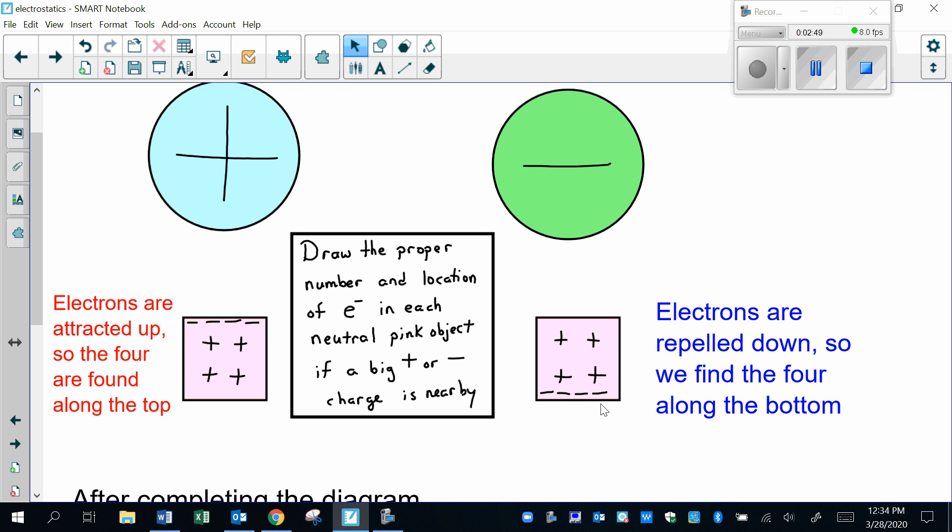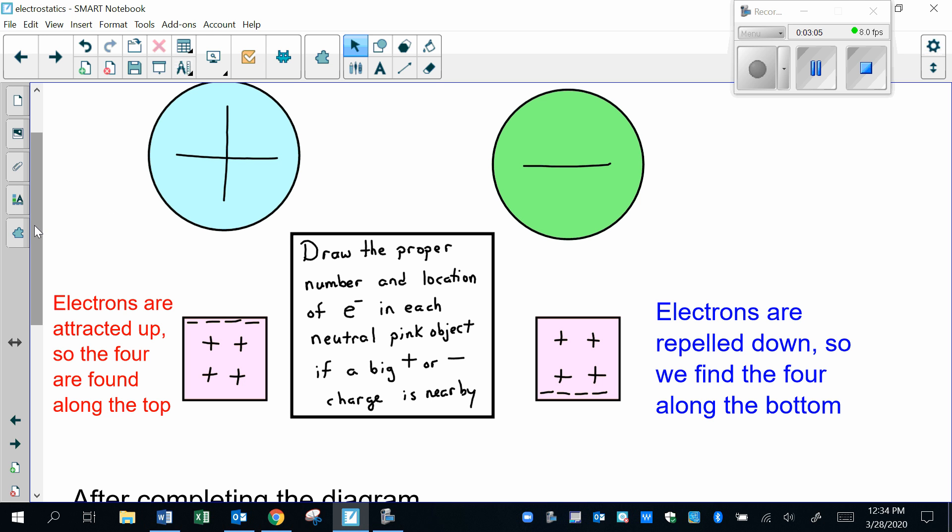In doing that, I see that those negatives are able to be moved around by these large outside charged objects, and those large outside charged objects are going to dictate where those negatives are found.